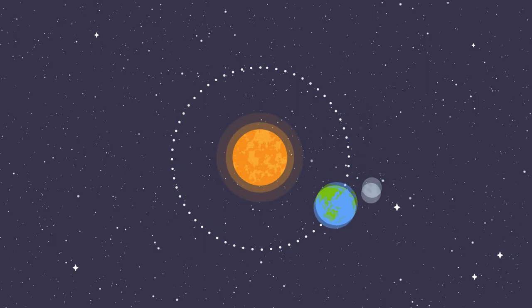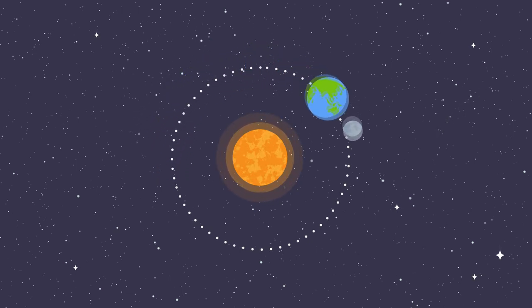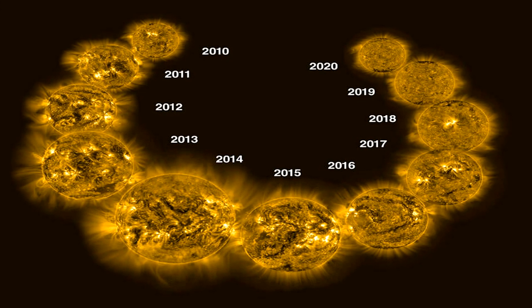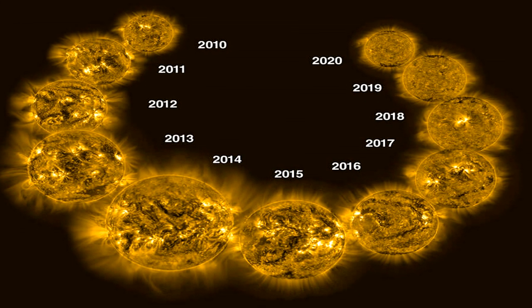The sun is far from being a static ball of gas. It undergoes cycles of activity that impact the entire solar system. The most well-known cycle is the 11-year solar cycle, during which the number of sunspots, solar flares, and coronal mass ejections varies.